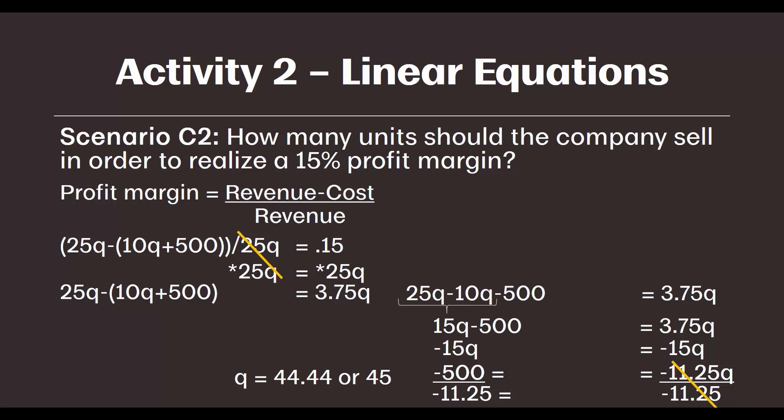Remember that dividing two negatives causes the negatives to offset each other to become positive numbers. Since I cannot make 44.44 units, and 44 units would not quite get me to a 15% profit margin, I need to make 45 units to hit my target. Now we've finished the manual calculations, and we're going to move over to Excel in the next video to solve for break even and for a 15% profit margin.